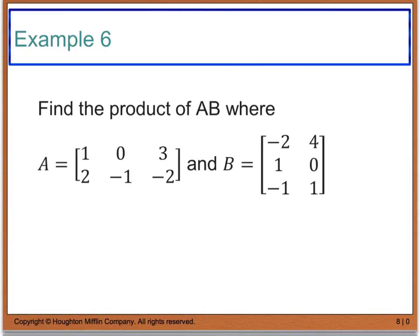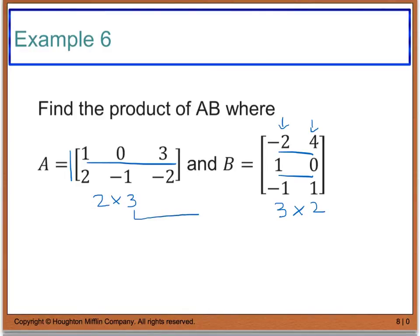Our first example says to find the product AB where A is a 2 by 3 matrix — 2 rows and 3 columns — and matrix B is a 3 by 2 matrix — 3 rows and 2 columns. In order to multiply, my inner dimensions have to be the same. I have a 3 and a 3, so I am okay to multiply. My product AB is going to be a 2 by 2 matrix.